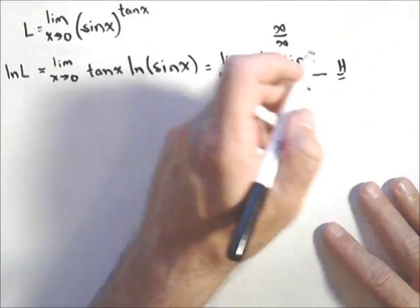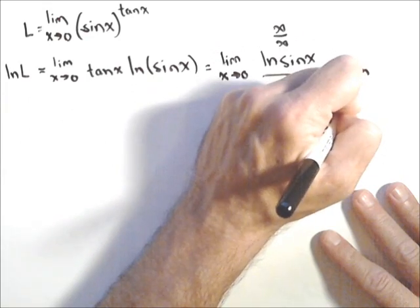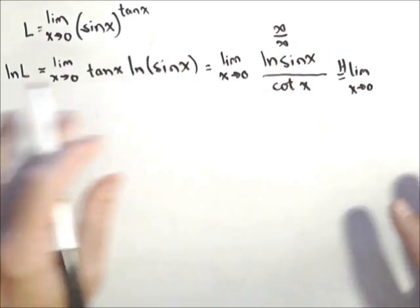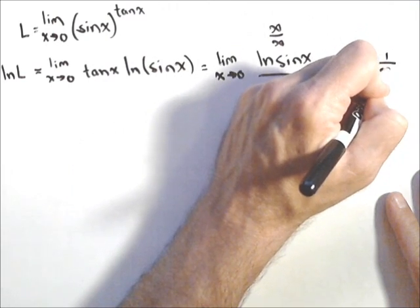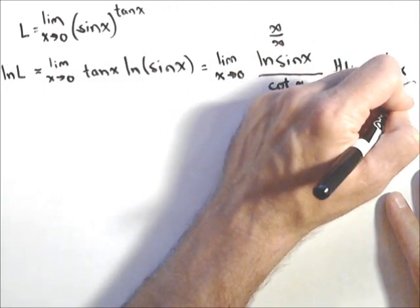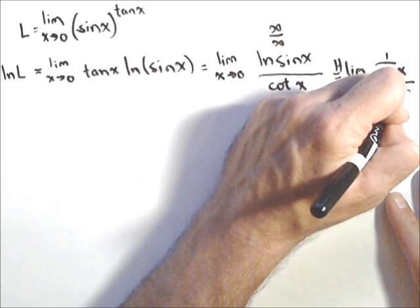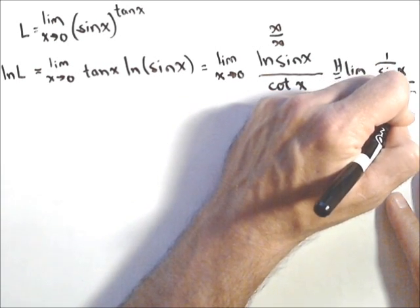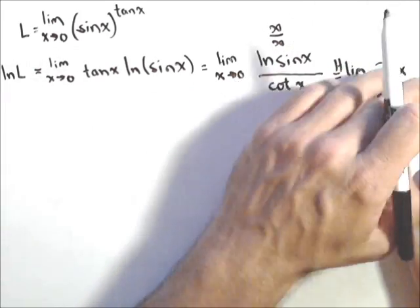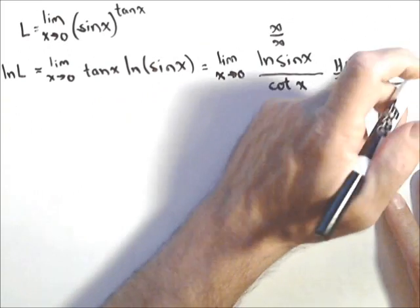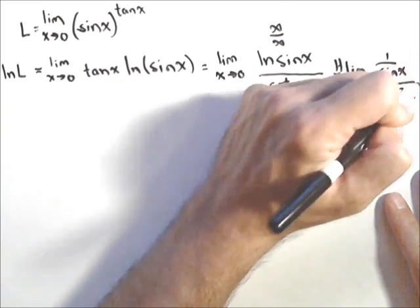So applying L'Hopital's and recalculating the limit, we get limit as x goes to zero. And I'm gonna have on top, one over sine x. And the derivative of cotangent is negative cotangent x cosecant x. Sorry, wrong derivative. Derivative of cotangent x is negative cosecant squared x.